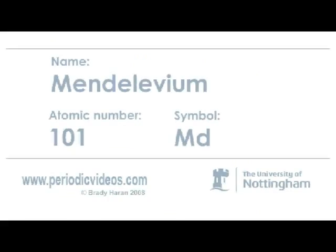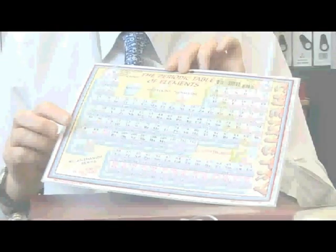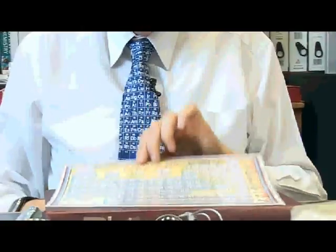Mendeleevium is named after one of the most important people as far as the periodic table is concerned, which is Dmitry Mendeleev. Mendeleevium is named after Mendeleev. In Russia, the periodic table is called the Mendeleev table.